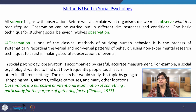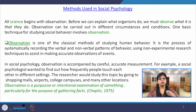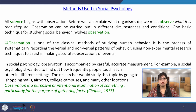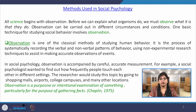Observation is a process of systematically recording the verbal and non-verbal cues of behavior, using non-experimental research techniques to assist in making accurate observations of events. The intrusion of experimentation is completely avoided in this classical research method — only strong observations are used to understand human behavior. For example, a social psychologist wanted to find out how frequently people touch each other in different settings. It is a common observation that in any social or group situation, people while interacting tend to touch each other's hands, faces, or even their own faces.